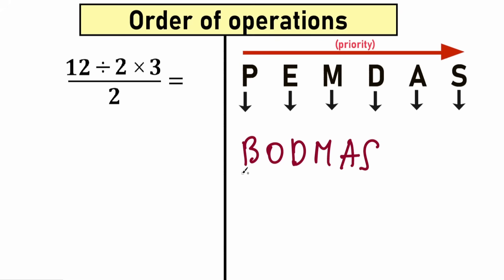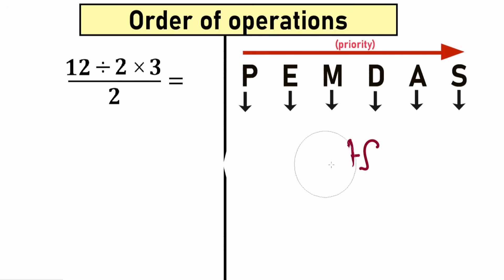Maybe a lot of students know about BODMAS, which is absolutely the same thing — we're just talking about different letters. The letter B stands for brackets, which is the same as parentheses — grouping symbols. It just depends on what country you're living in. BODMAS is mainly used in India and the UK; PEMDAS is mainly used in Europe and the USA. So we're talking about the same order of operations — a classic order of operations.